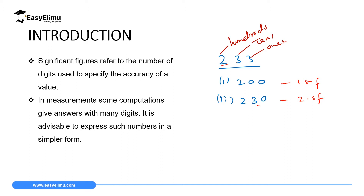Then if someone says they need all the details about the number, you can say you have 233. In this case, you have written it in three significant figures, and the person will know the hundreds, the tens, and the ones that you have. So the more the number of significant figures in a number, the more precise your answer is.